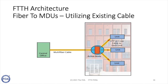Some buildings are connected to fiber by just bringing fiber into the building and then using the copper cables already in the building. There are methods of using phone lines — what we call DSL or digital subscriber line — and there are even techniques to use video cables like those for cable or satellite TV to connect internet into each unit in the building. This is another option if the cables are capable of handling broadband speeds.